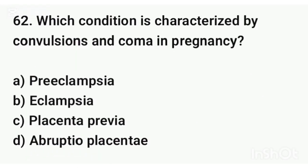Question number sixty-two. Which condition is characterized by convulsions and coma in pregnancy? The correct answer is option B: Eclampsia.